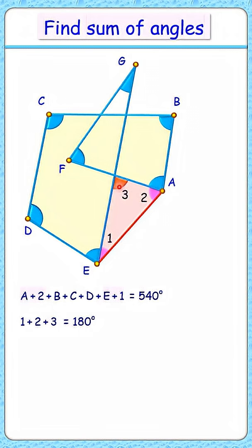These two angles are vertically opposite angles, so this is also angle 3. And in this triangle, applying angle sum property, so this also is 180 degrees.